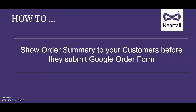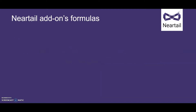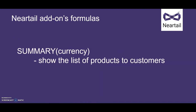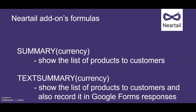Today I'm going to show you how to show a summary of the products ordered by a user. You can use the summary function to show the list of products selected by the user so that they can review it before placing their order. If you want to record this order summary in Google Forms, you can use the text summary function.